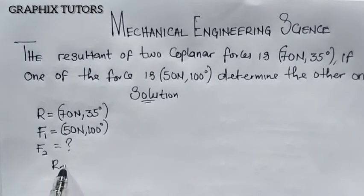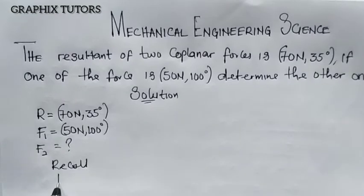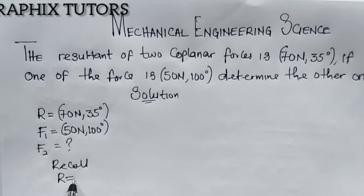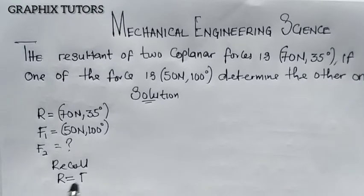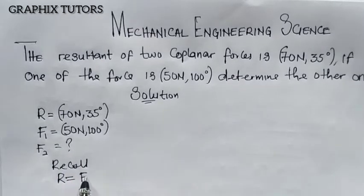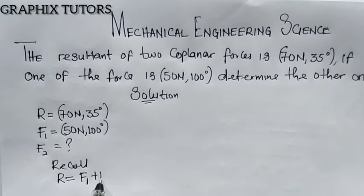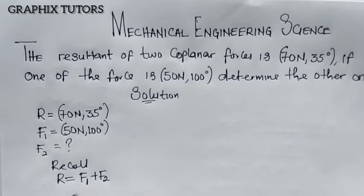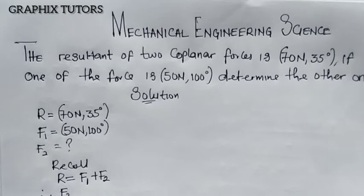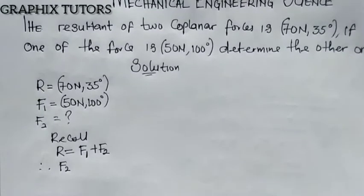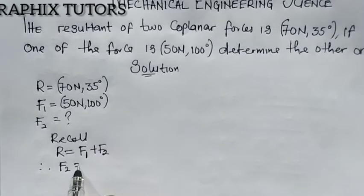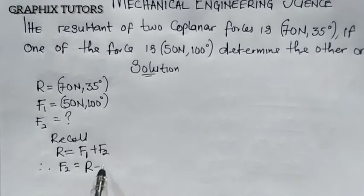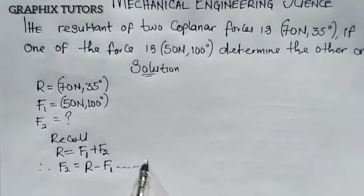Recall that our resultant, or net force, in this system is equal to F1 plus F2. That means therefore F2 will be equals to R minus F1 — equation one. Remember this equation.